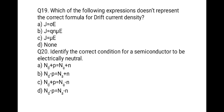Question 20: Which of the following expressions does not represent the correct formula for drift current density? The drift current density formula is J equals sigma times E, where sigma equals q times N times mu. So options A and B are true representations of drift current density. The third option, J equals mu times E, is a wrong answer.